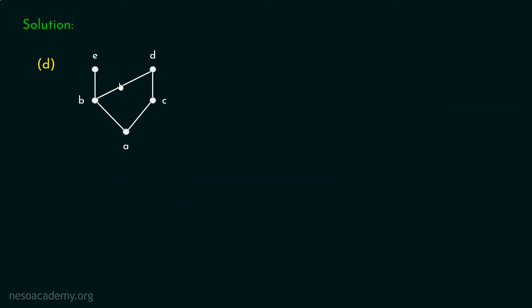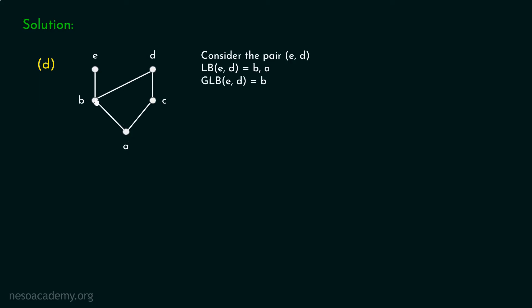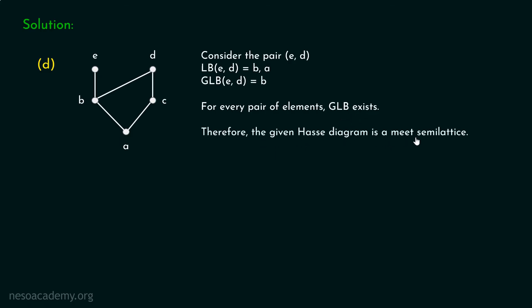Let's see this figure. Let's find whether the given Hasse diagram is a Meet Semilattice or not. Consider the pair e and d. Lower bounds of e and d are b and a. Note that c is not a lower bound of e and d — there is a path from d to c but no path from e to c. So there are only two lower bounds of e and d: b and a. Greatest lower bound of e and d is obviously b — out of these two, b is the greatest. It is evident that for every pair of elements, greatest lower bound exists. Therefore, the given Hasse diagram is a Meet Semilattice.